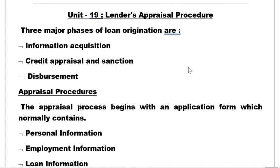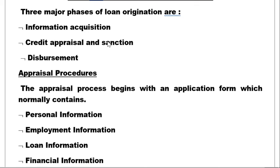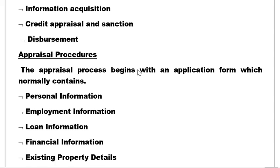The lender appraisal procedure covers the process from loan application to disposal. There are three steps: first, information acquisition — seeking all information about the borrower such as income, background, and ability to pay EMI. Second, credit appraisal. Third, the sanction and disposal. These three parts form the basic appraisal procedure.